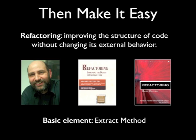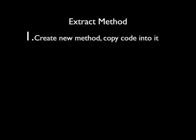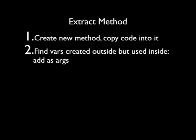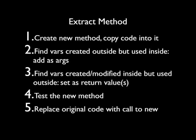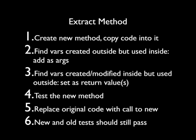Martin Fowler's book Refactoring — with examples in Java, though there's now a Ruby version — introduced the disciplined, meticulous approach to changing code, so even this simple one has several steps. First, we create a new method, and then copy the code we want to extract into it. Second, we find variables that are created outside but used inside our new method, and we add them as args. Third, we find variables created or modified inside our new method but used outside, and we set those as returned values. Fourth, we test our new method in isolation. Fifth, we replace the original code with a call to our new code. And sixth, our new and our old tests should still pass.